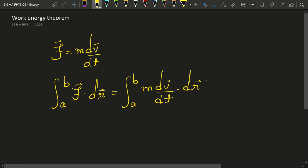Now you know that I can write the displacement as velocity into time, and hence I can write dr as v dt.